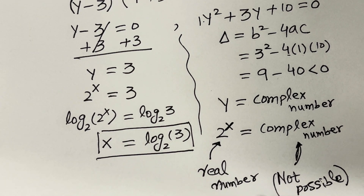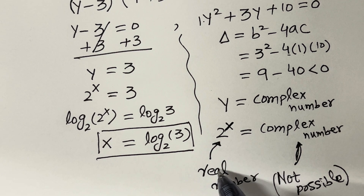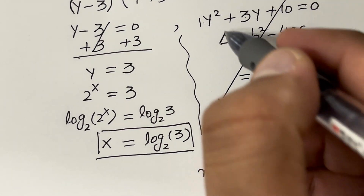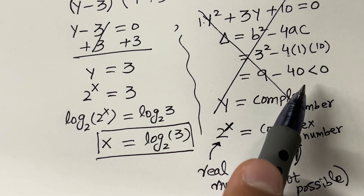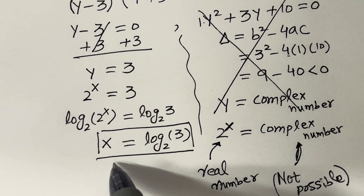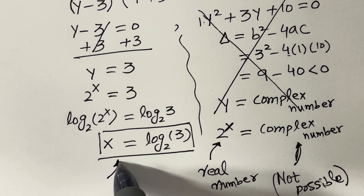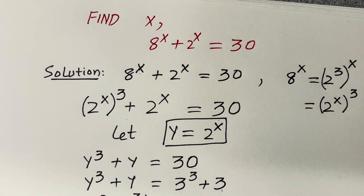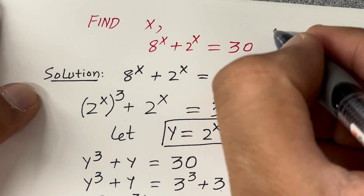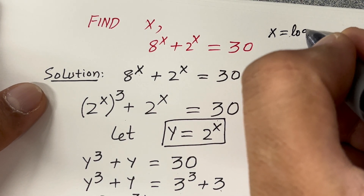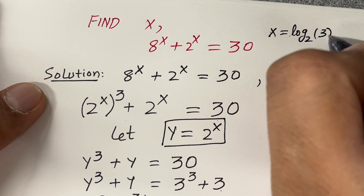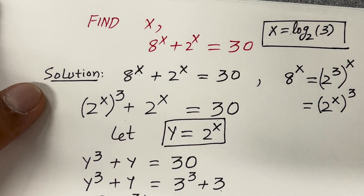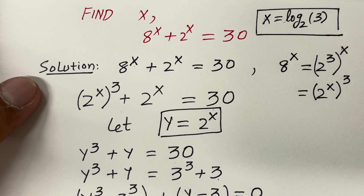Since we want real solutions, and 2 raised to the power x is a real number, it cannot equal a complex number. Therefore we discard this factor, and x equals log base 2 of 3 is the only solution to the given equation.